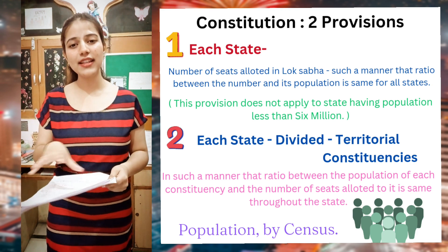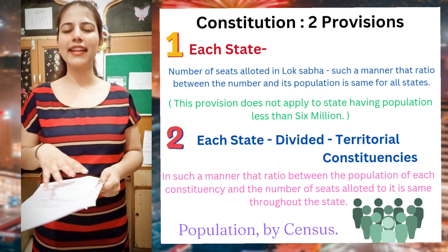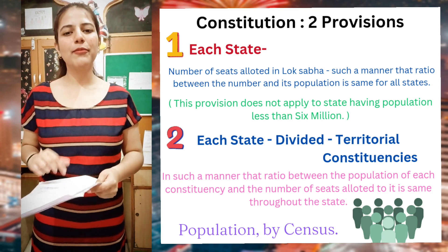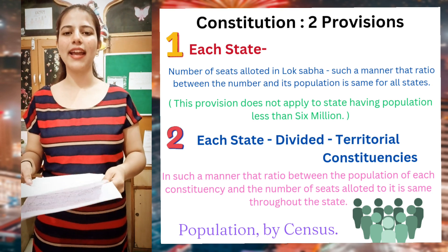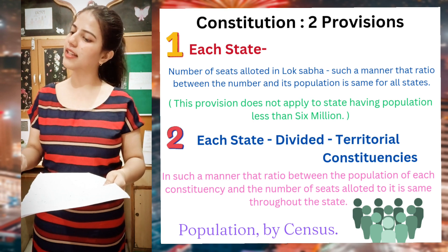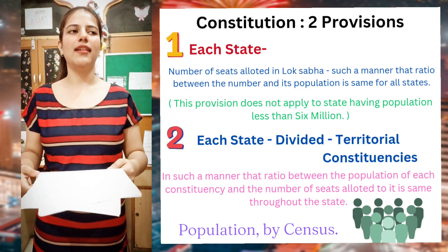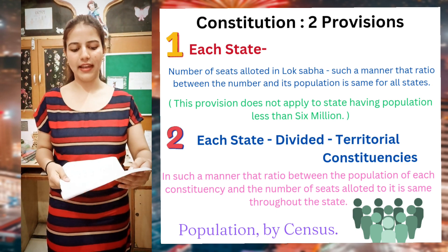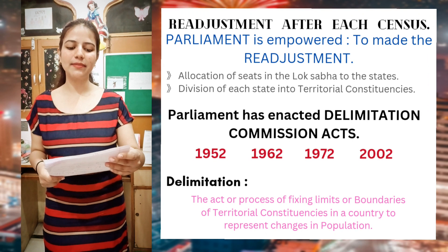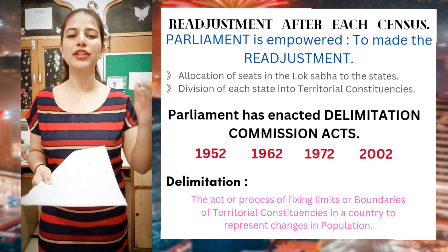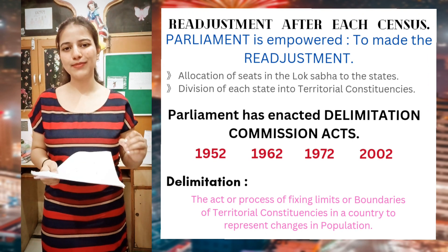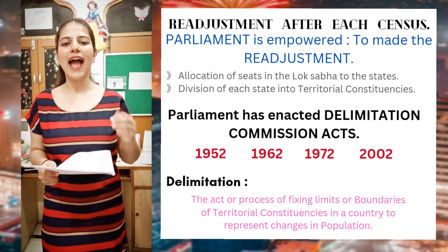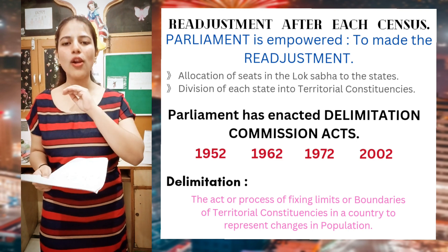Now, on the basis of population, we will divide. Where does population data come from? Through census. The census, which happens every 10 years, gives us the figures from which we allocate the seats. So re-adjustment happens after each census, because population is not something that is constant — it keeps on changing, and in the case of India, it is almost always increasing.